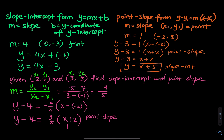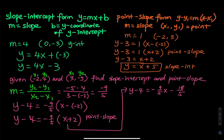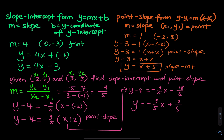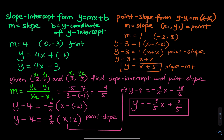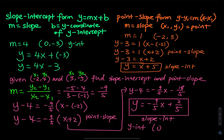Work your way to slope-intercept form. You have y minus 4 equals negative 9 over 5x minus 18 over 5. Then add 4 on both sides: y equals negative 9 over 5x. Adding 4 gives 2 over 5. So y equals negative 9 over 5x plus 2 over 5. This is the slope-intercept form. The y-intercept is when x equals 0, so y equals 2 over 5, and the slope is negative 9 over 5.